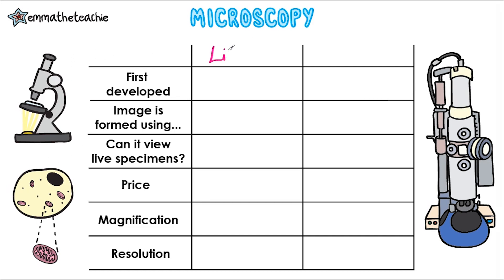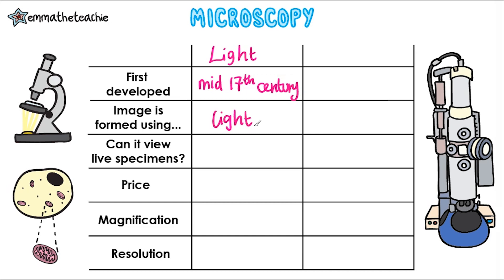First up is a light microscope, which you'll have seen and used in school. It was first developed in the mid-17th century, and it uses light to form an image. Because of this, it can be used to view live specimens, for example, bugs. It's also pretty cheap and easy to use, which is a big advantage.